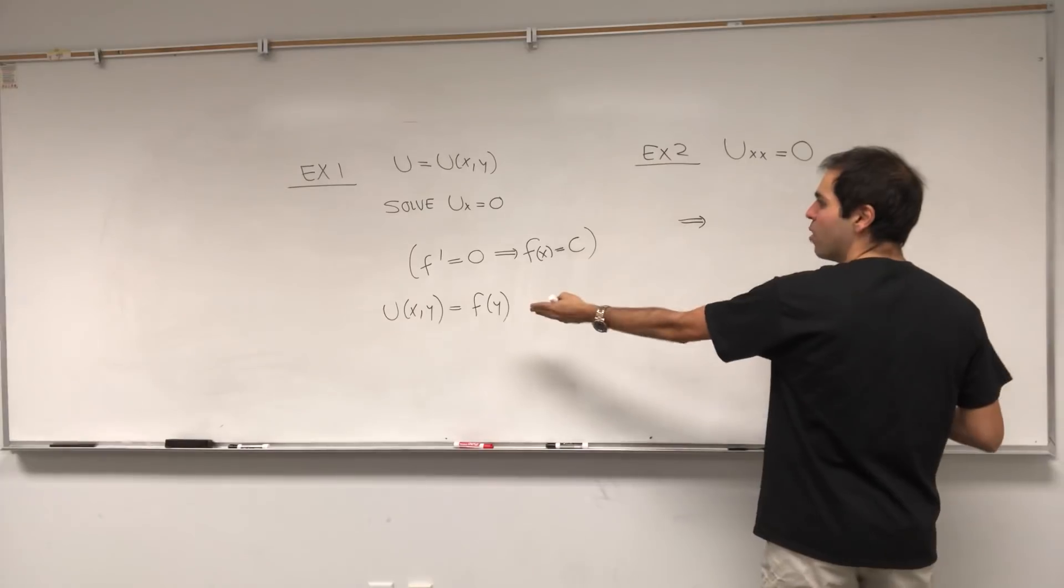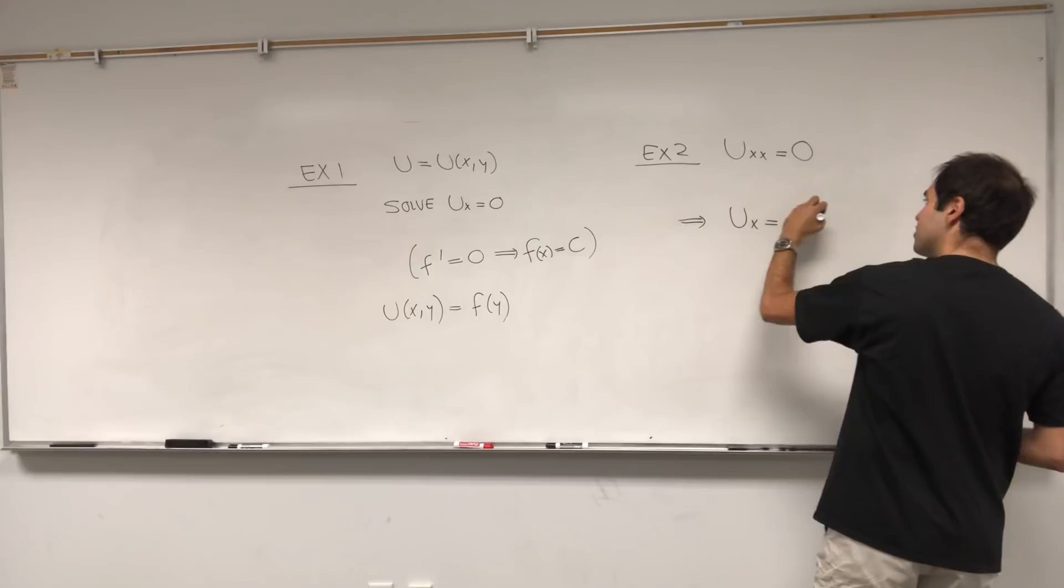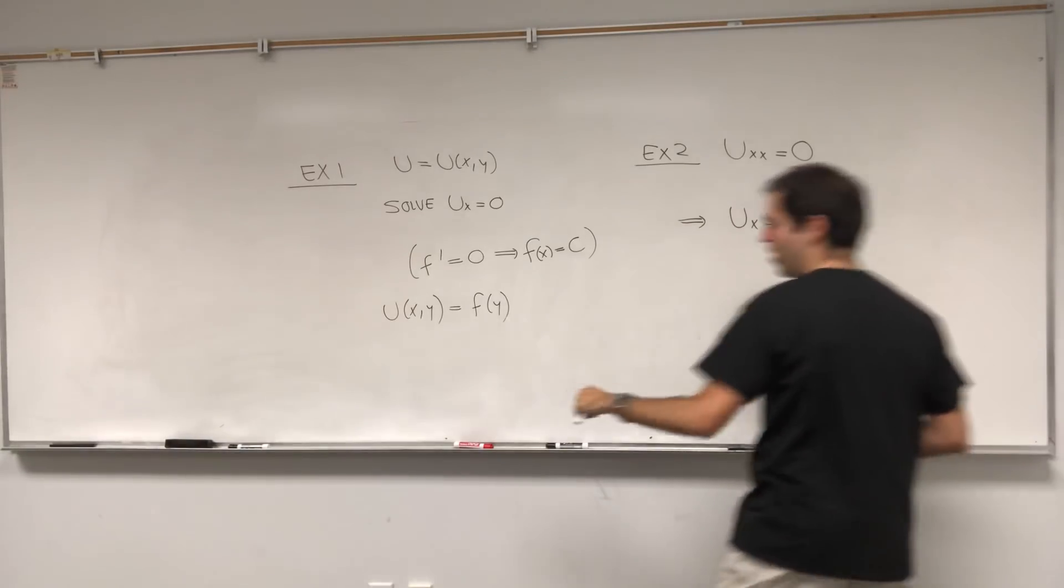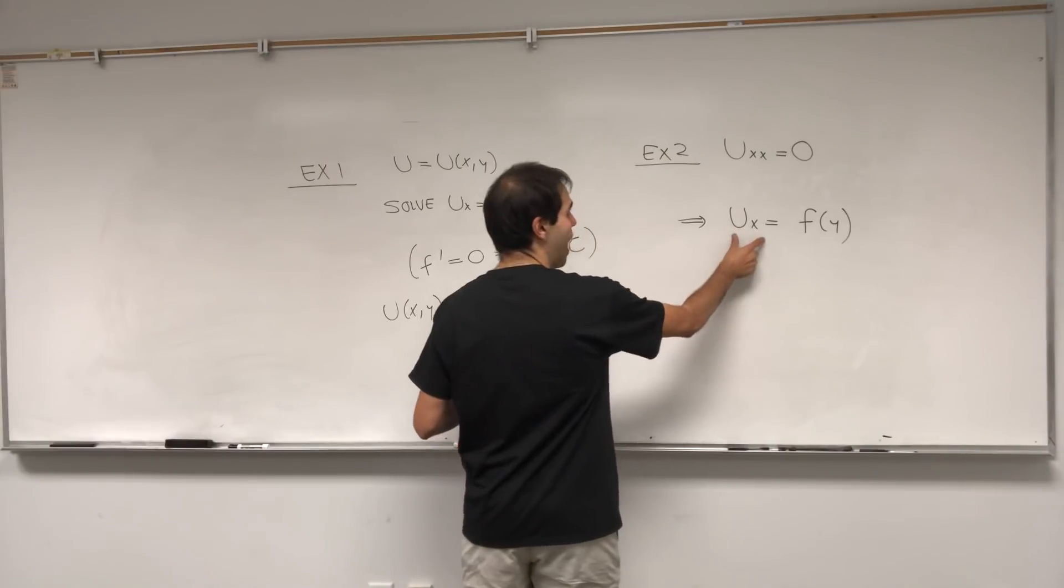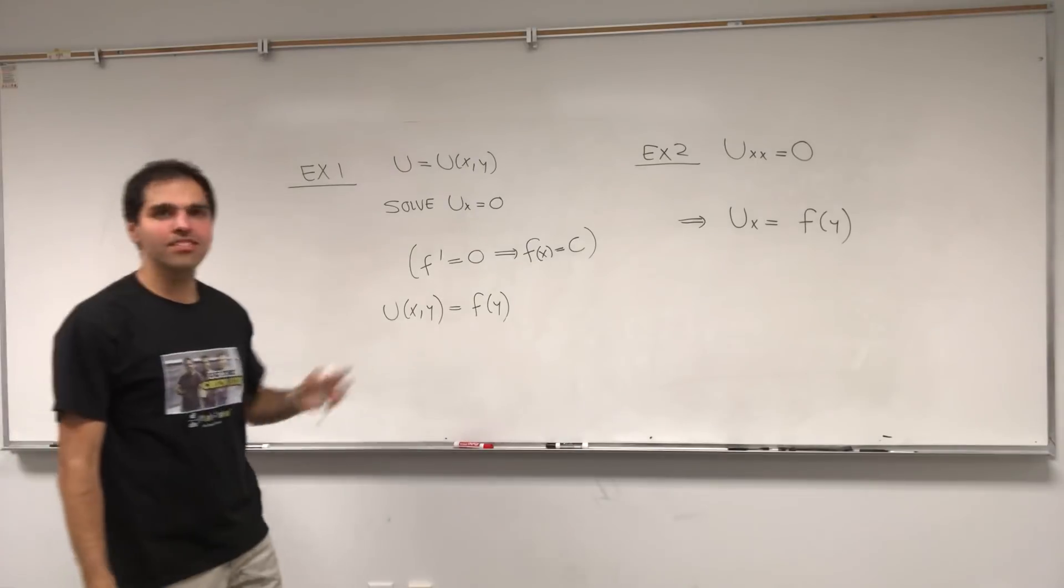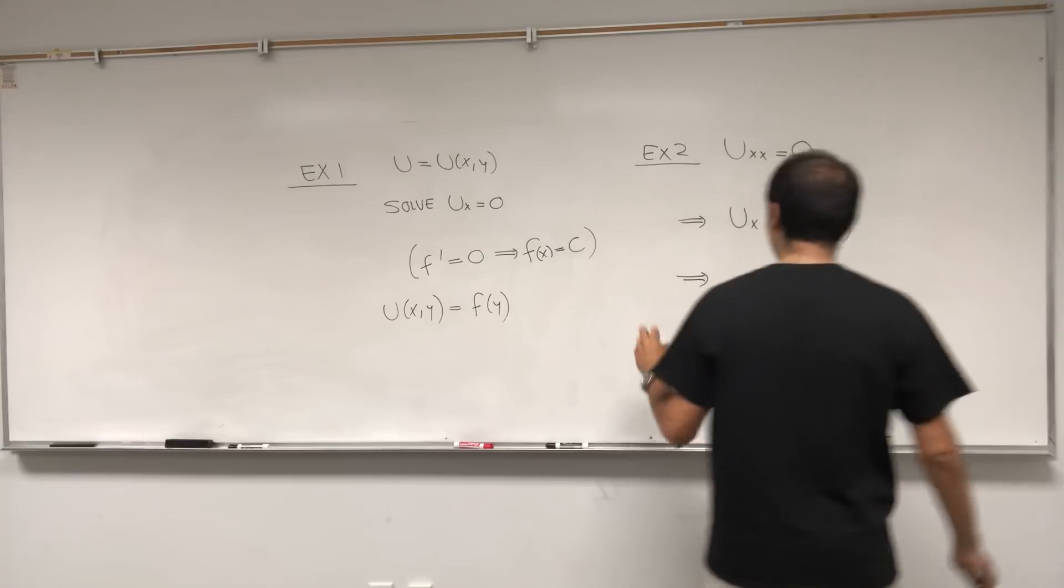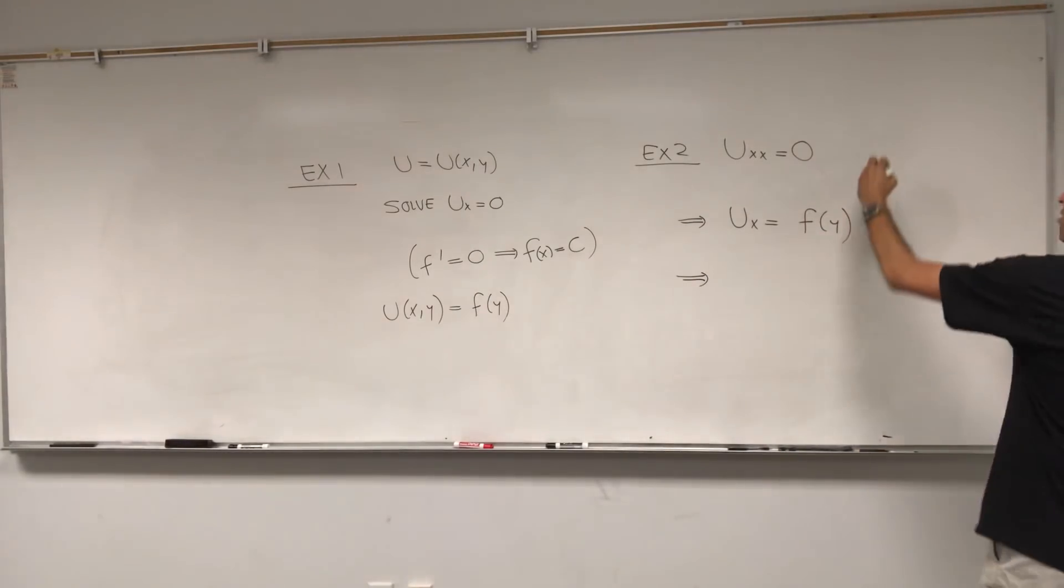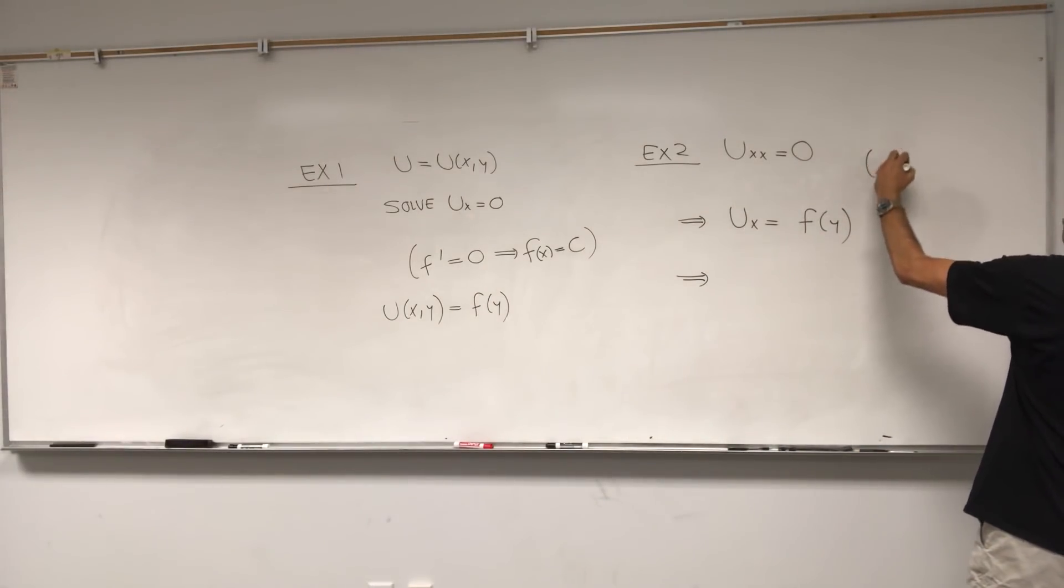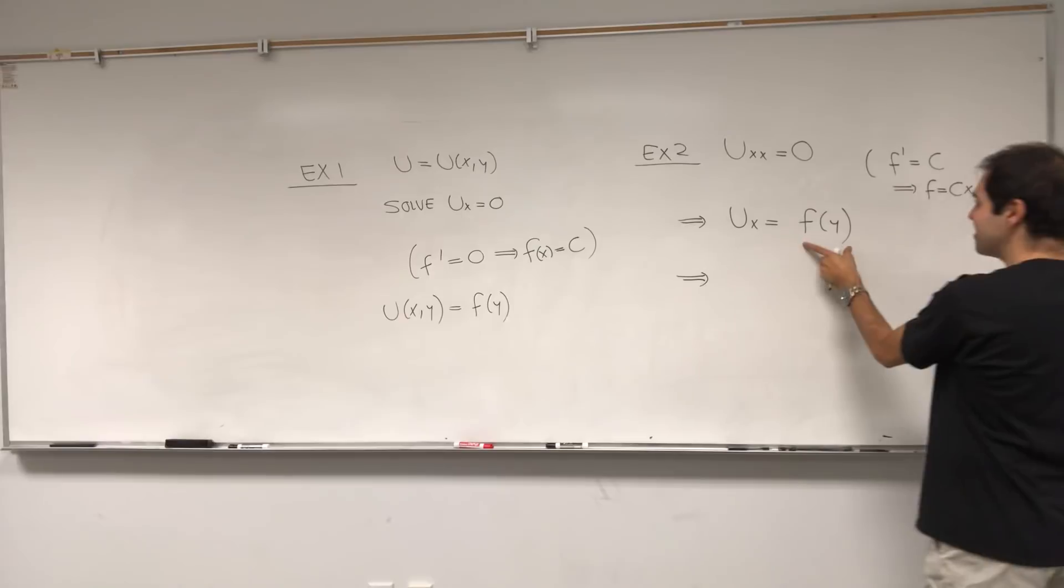If, let's say, f double prime is zero, then f prime is a constant. So here ux is, as before, any function of y because what we're saying is uxx is zero. So going one level up, it means ux is a constant. But here the constant is a function of y. And then we just have to go one step further. So if I tell you that, let's say, f prime equals c, you would tell me, well, f is cx plus b or cx plus d or something. Well, same thing, except remember...